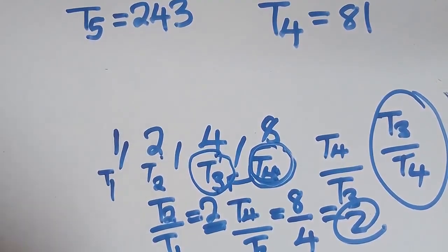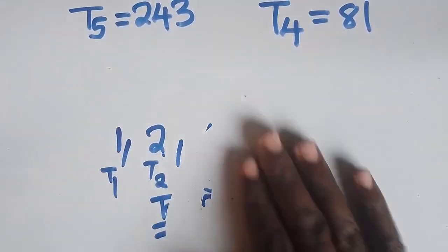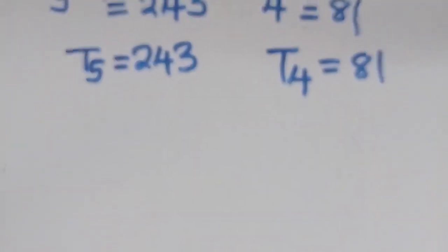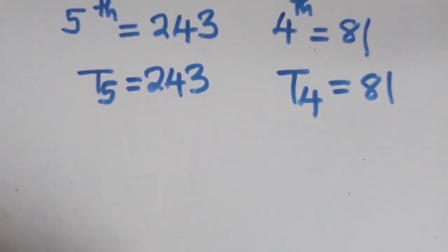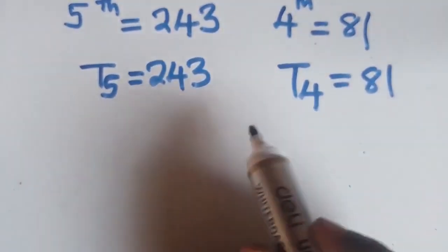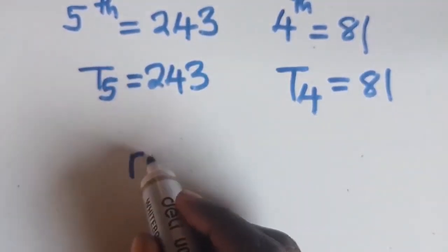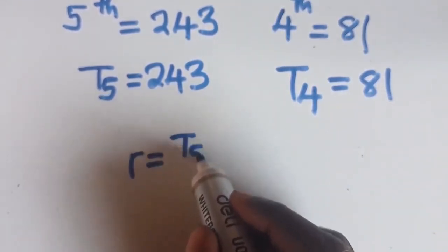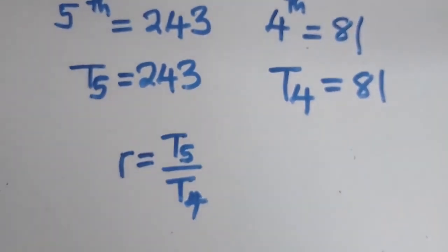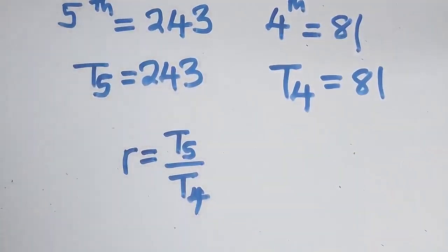So the common ratio is equal to T5 over T4, because we are given the fifth term and the fourth term. This is how you find the common ratio.